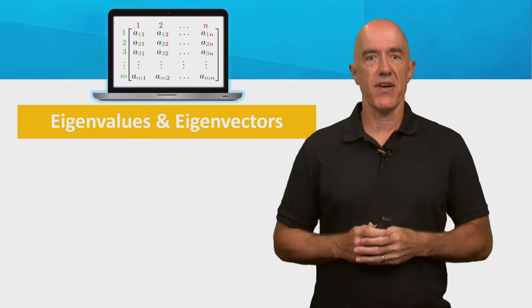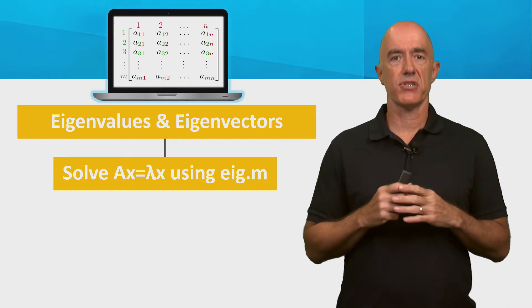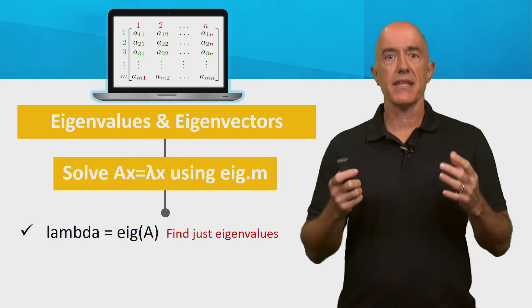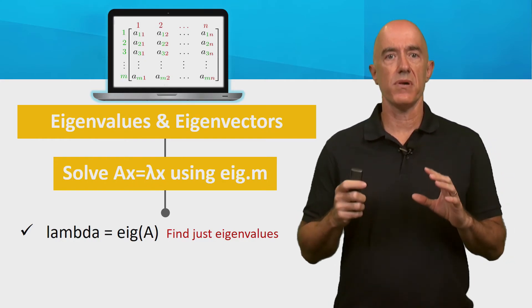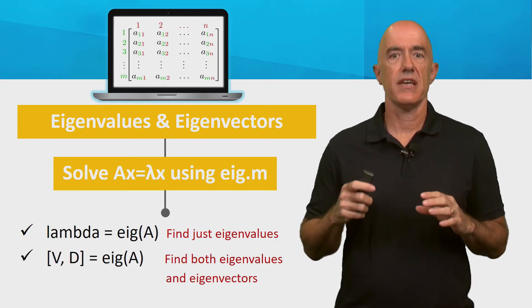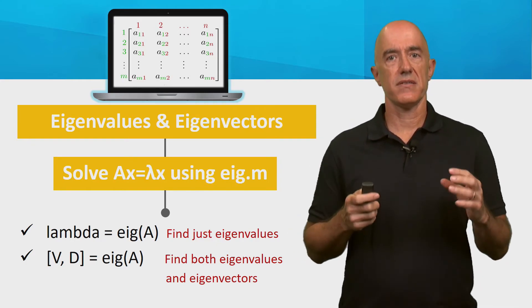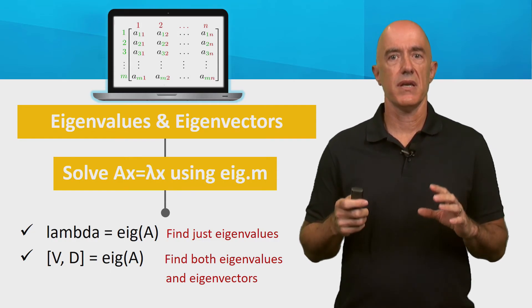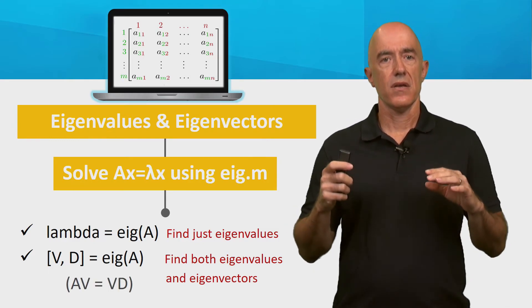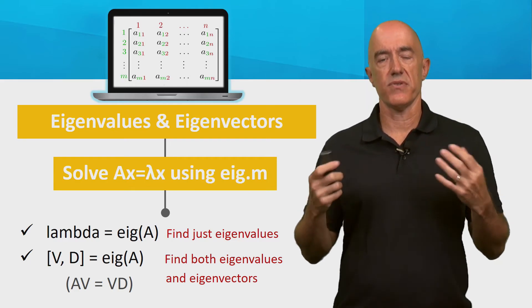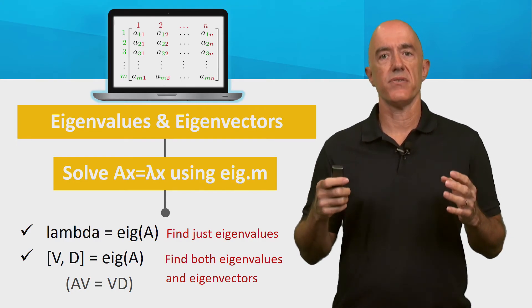Now let's solve the eigenvalue problem. MATLAB can solve AX equals lambda X using the function eig. Eig can find just the eigenvalues if the left-hand side is a single variable, or both eigenvalues and eigenvectors if the left-hand side has two variables. In this case, V is a matrix with eigenvectors as its columns, and D is a diagonal matrix with eigenvalues on the diagonal. You may remember the equation AV equals VD when we diagonalize the matrix A using eigenvalues and eigenvectors.